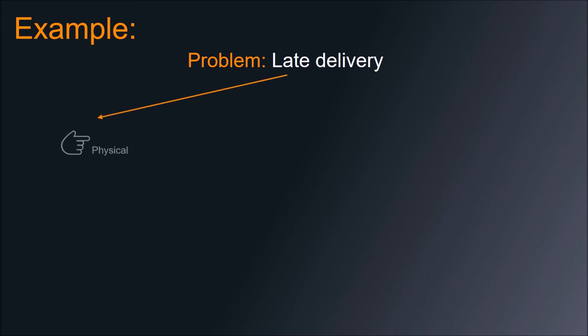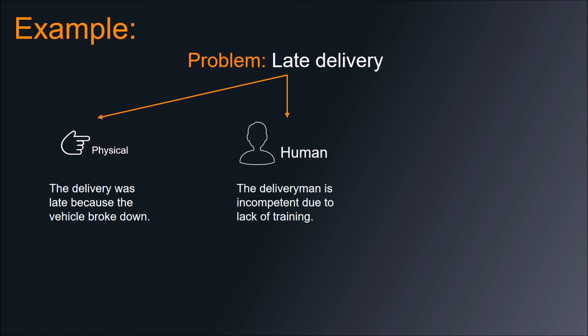Physical cause: the delivery was late because the car broke down. Human cause: the delivery man was incompetent due to lack of training. Organizational cause: insufficient workforce due to absence of needs analysis system. RCA have to determine the root cause of the problem in order to apply a fundamental solution.